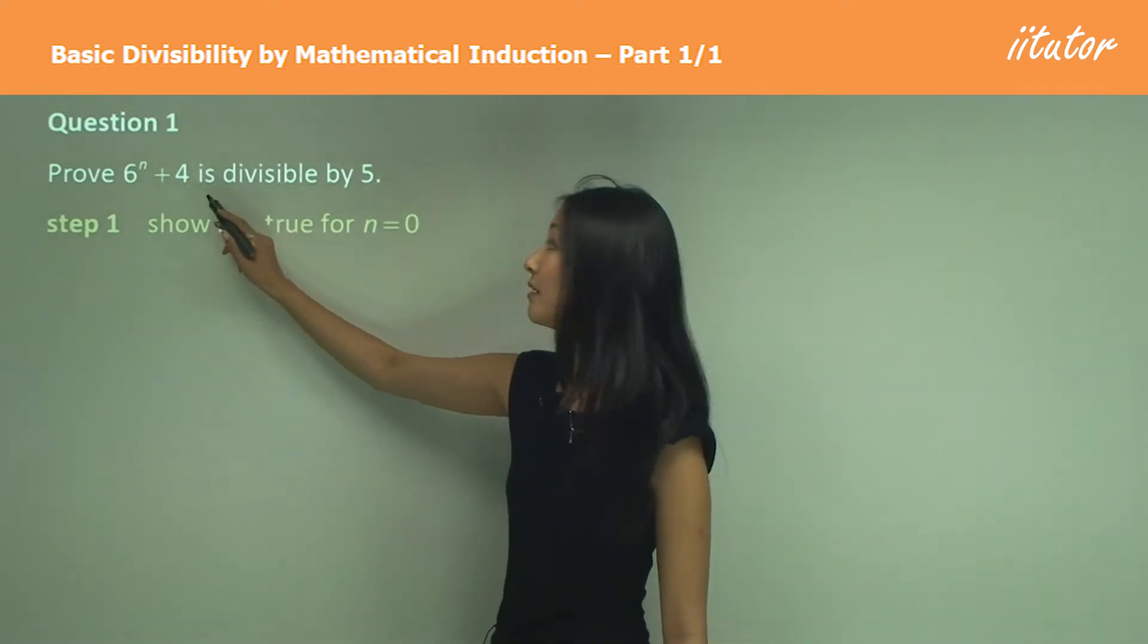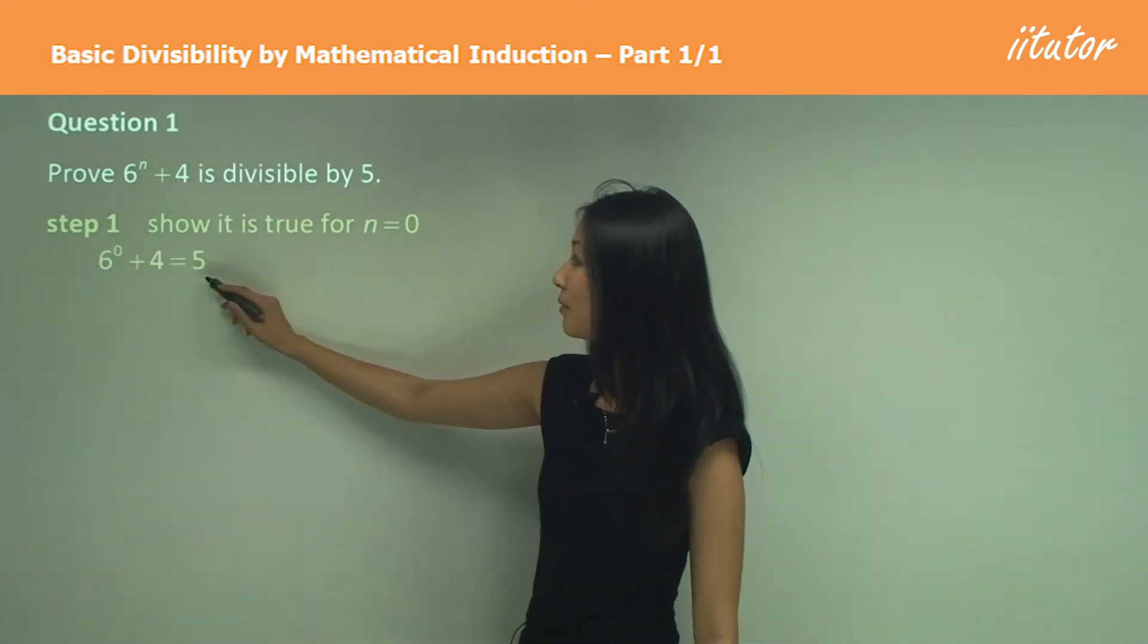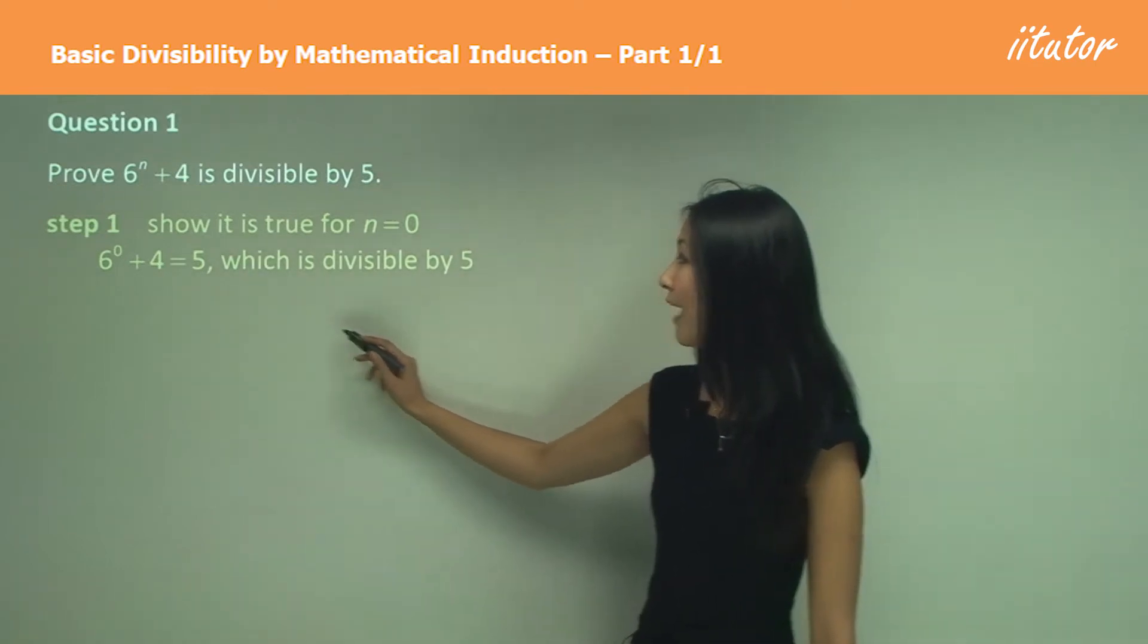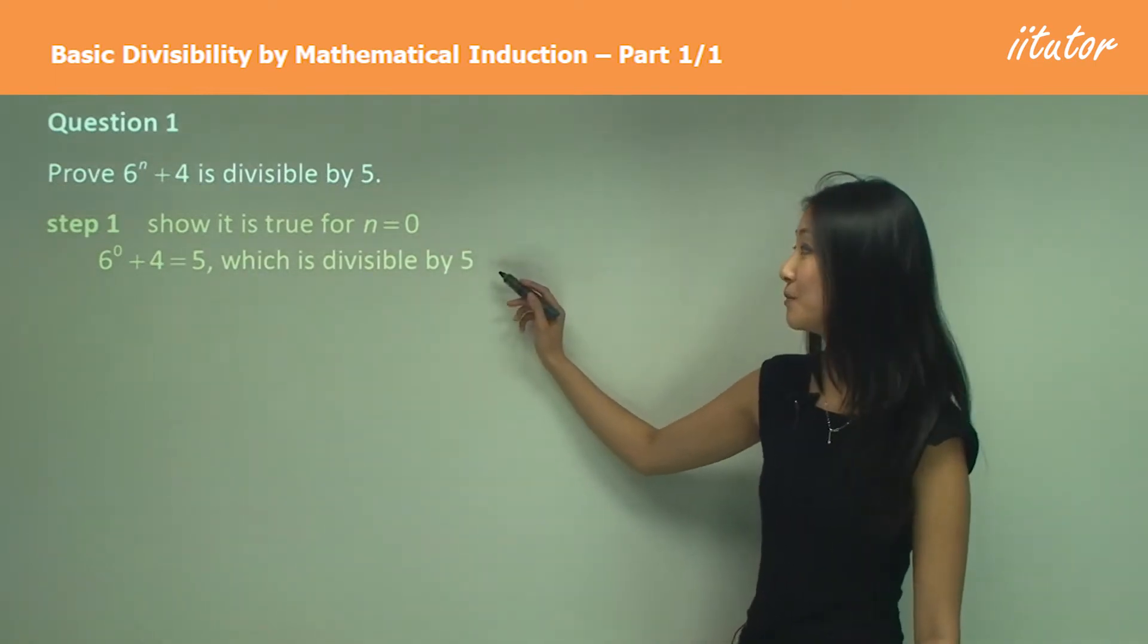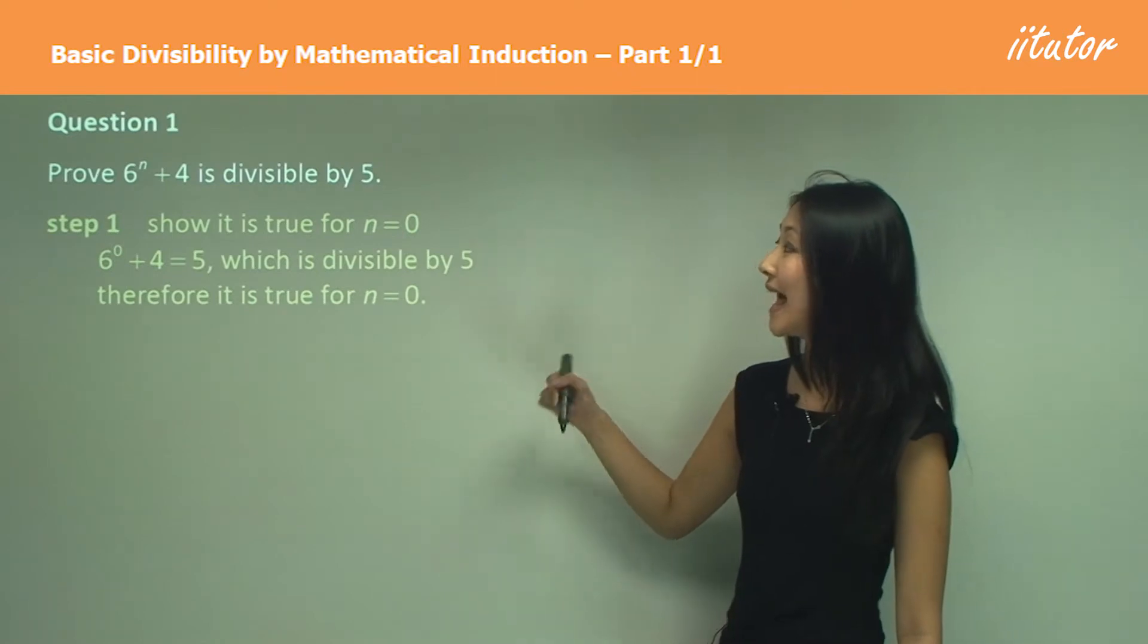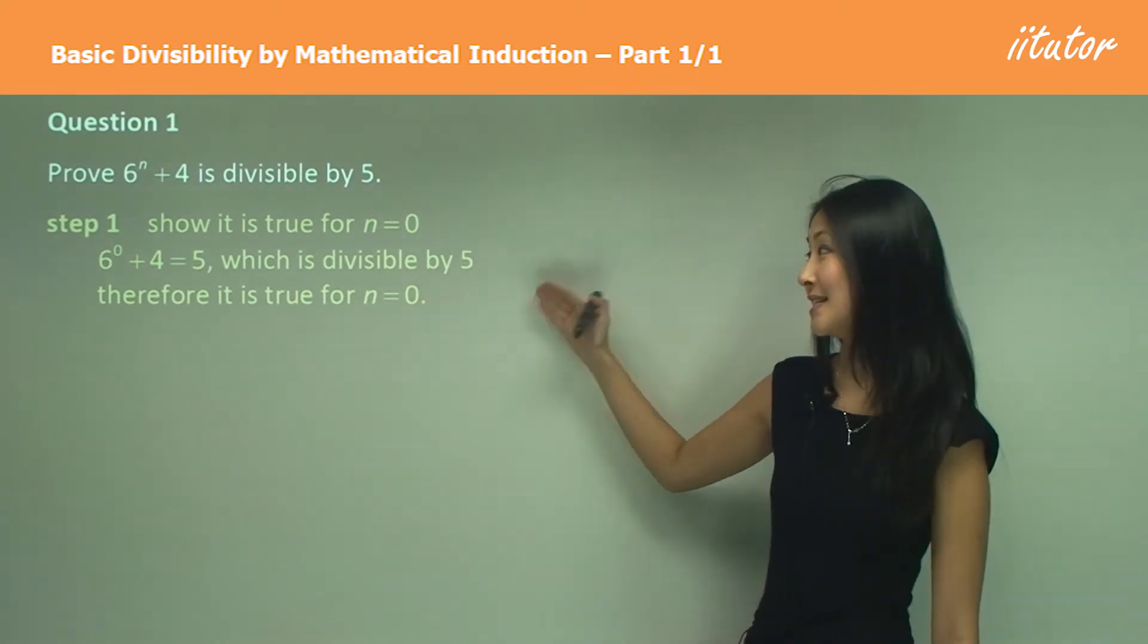So 6 to the power of 0 is 1. 1 plus 4 equals 5, which is definitely divisible by 5. So we can say therefore it is true for n equals 0.